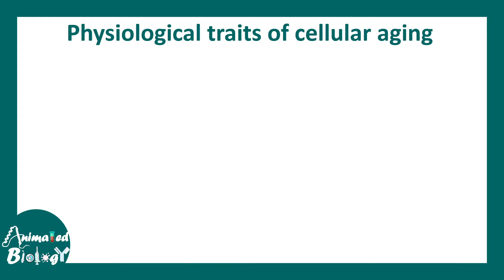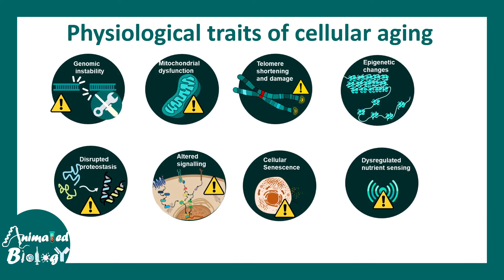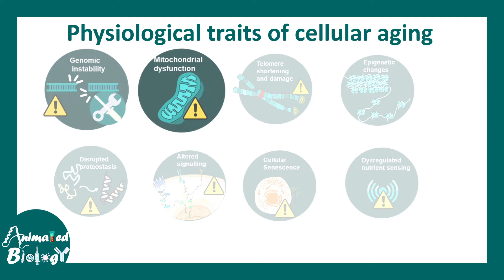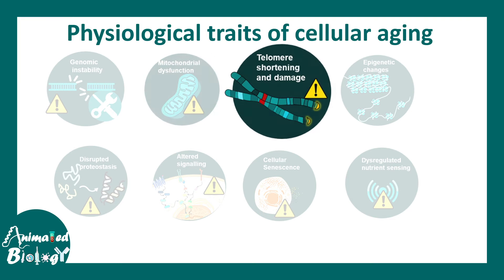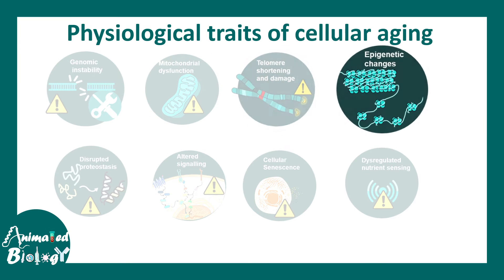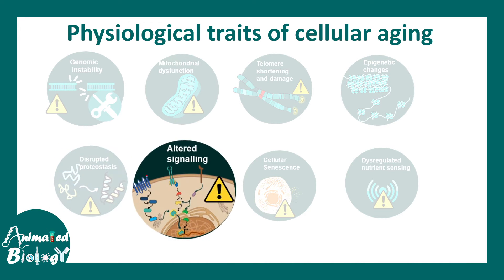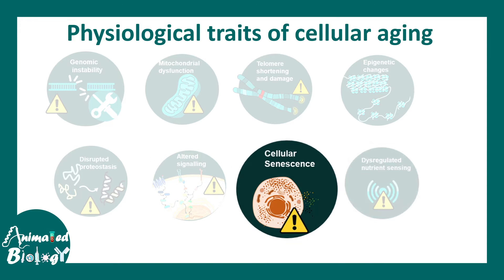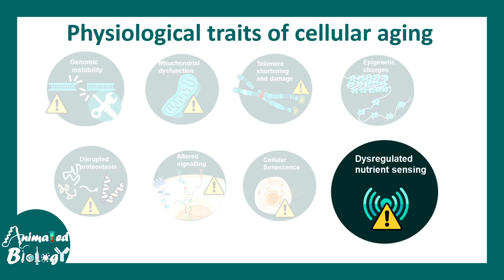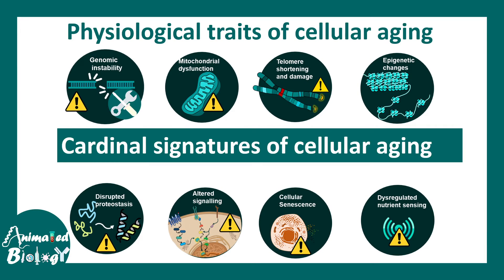There are several physiological traits of cellular aging. In this video we'll try to understand how genomic instability, mitochondrial dysfunction, telomere shortening and damage, epigenetic changes, disrupted proteostasis, altered cell signaling, cellular senescence, and dysregulated nutrient sensing can affect the process of cellular aging. These are the cardinal signatures of cellular aging, and all these factors are involved in the process.